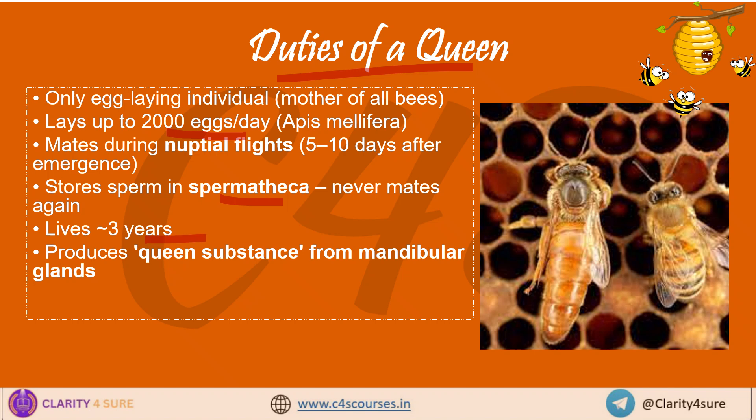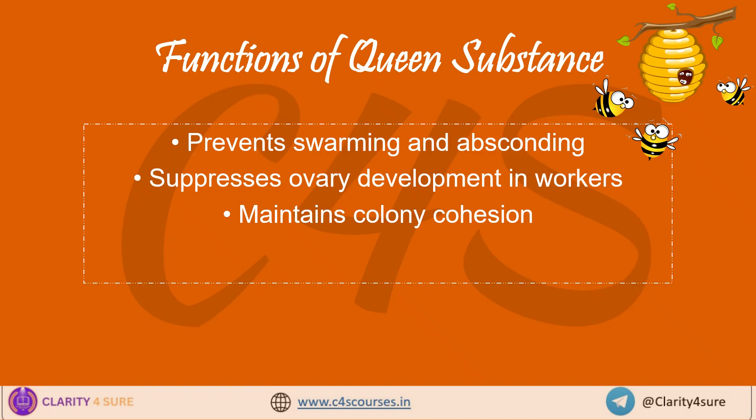She also produces a special chemical called queen substance from her mandibular gland. This chemical helps the colony stay peaceful and united. This queen substance has superpowers: it stops other female workers from laying eggs, prevents the colony from leaving the hive — which is also called absconding — and keeps everyone working together in harmony. It's like the queen's perfume; it keeps everyone calm and organized.